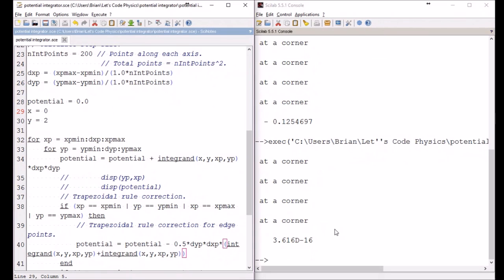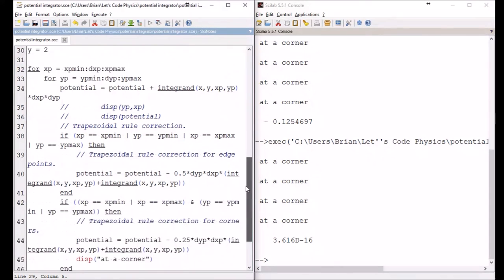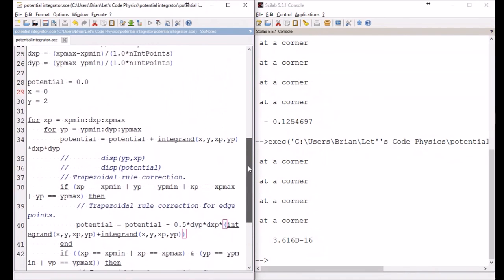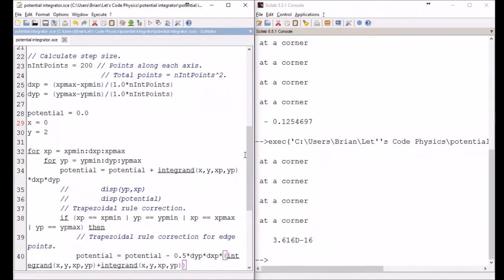So this is exactly what we would expect physically. So anything times 10 to the minus 16 is just the computer's garbage left over. So this is basically zero. Okay, so all is right with the world. I probably didn't need to have the trapezoidal rule corrections, but it's nice to have them. So thank you so much for watching. I will see you next time.